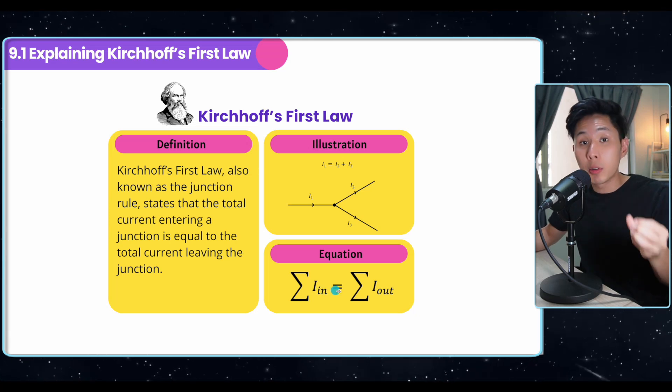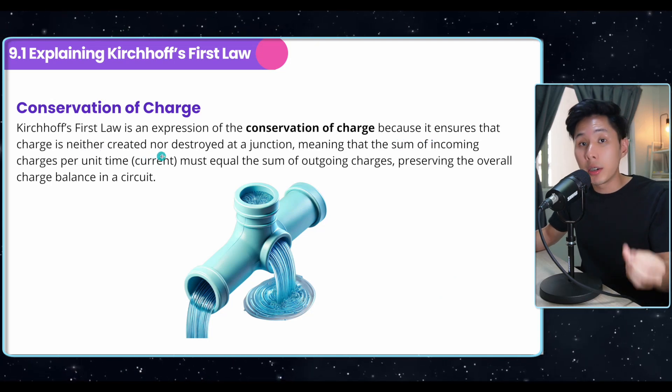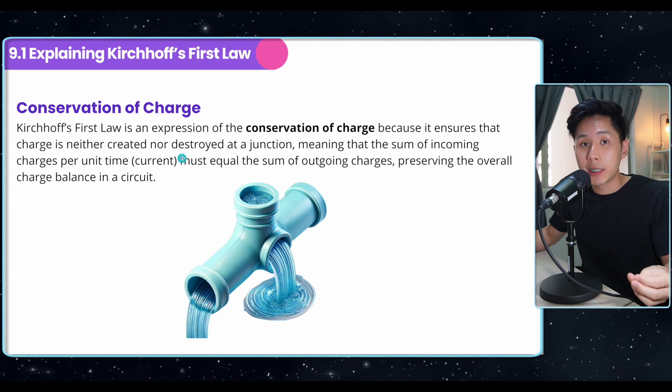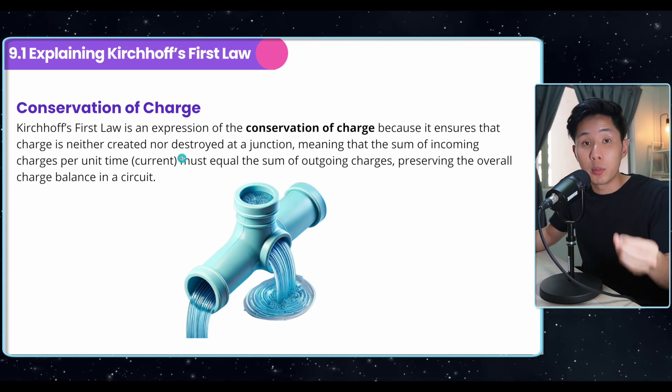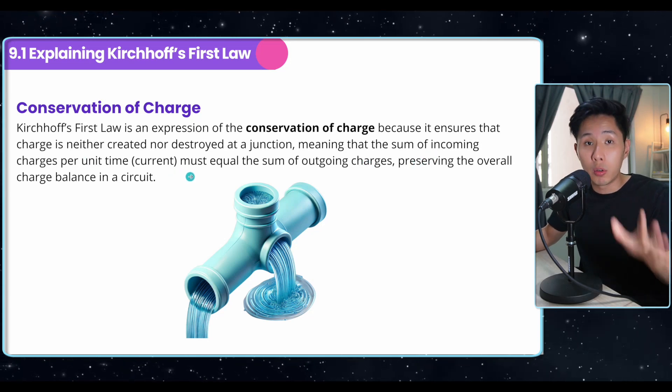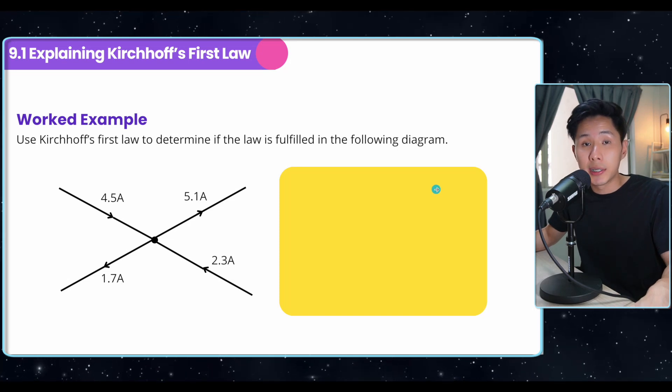If the input current is always equal to an output current, it says that charge is neither created or destroyed at a junction. So nothing is gone, nothing is created when charges move through a junction. And the sum of incoming charges per unit time will always be equal to the sum of outgoing charge. Let me show you some work example to illustrate this law.